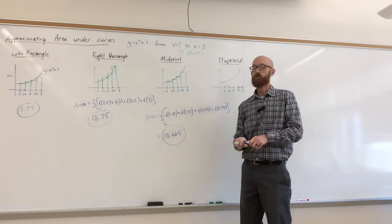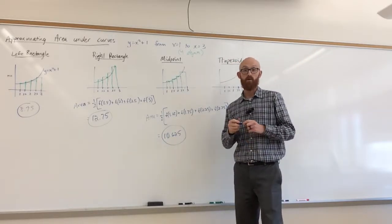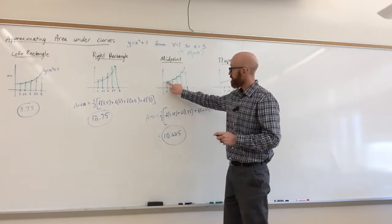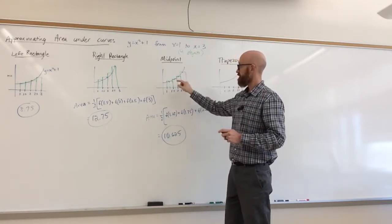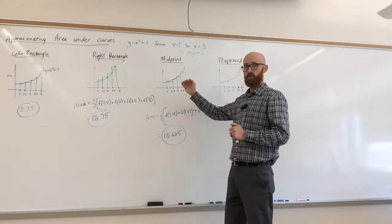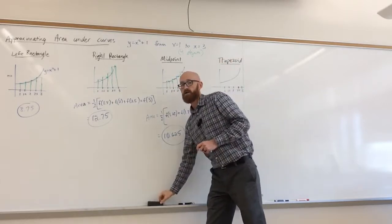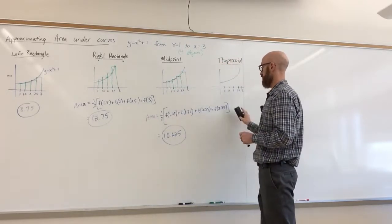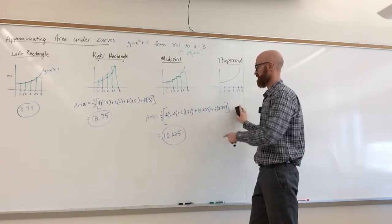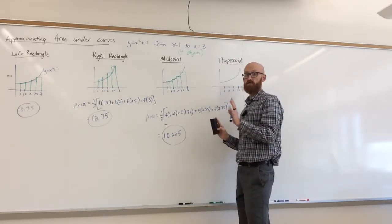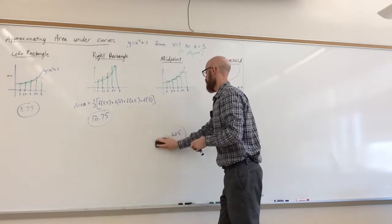Now is it an under or over approximation? Not really sure. It looks like there's little pieces that stick out above the curve, and there's also little parts that remain below the curve. So it's not quite determined if it's above or below the approximation. But this 10.625 should be pretty close to the actual area.